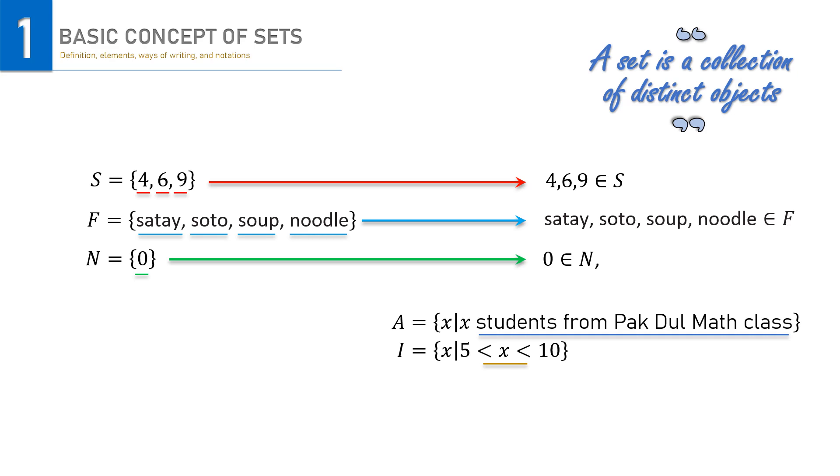On the other hand, we know that 1 clearly is not the element of set N, so we can write it like this instead. Similarly, since 4, 12, and 20 are not the members of I, they can be expressed like this. See the difference of notation we use here.